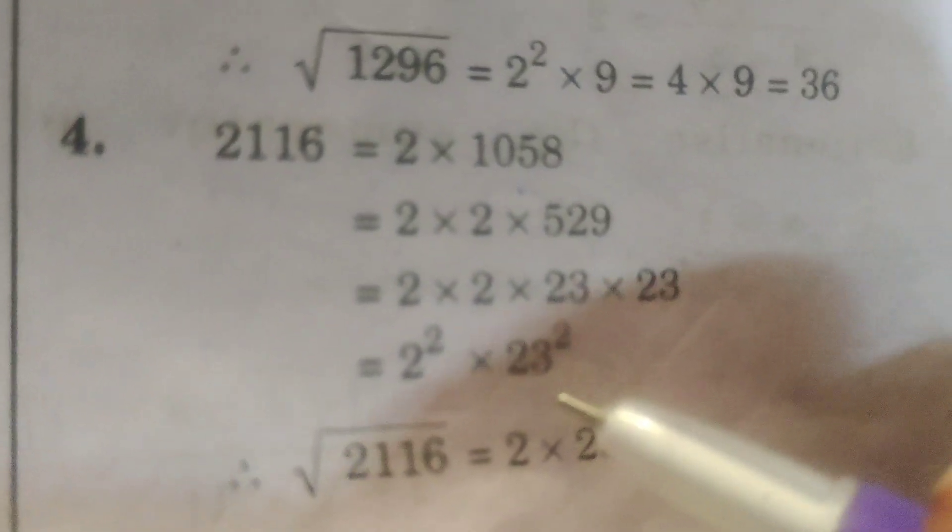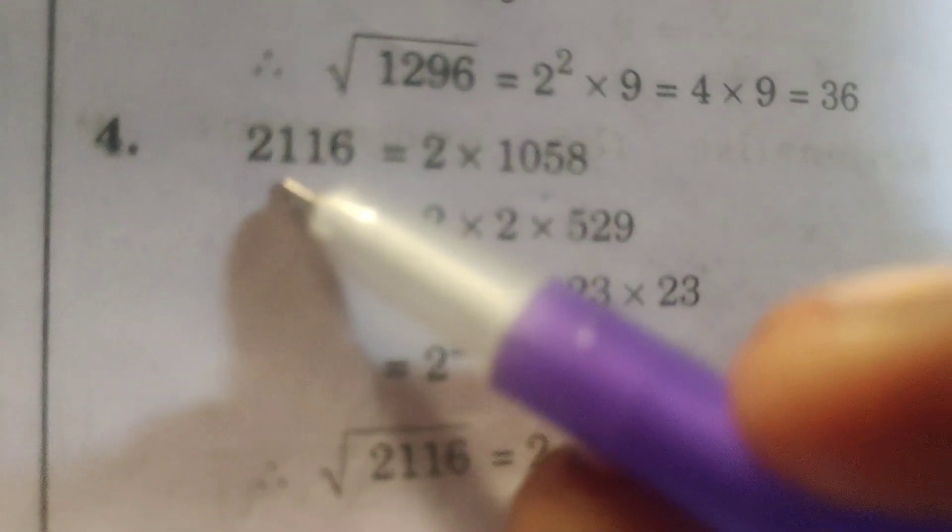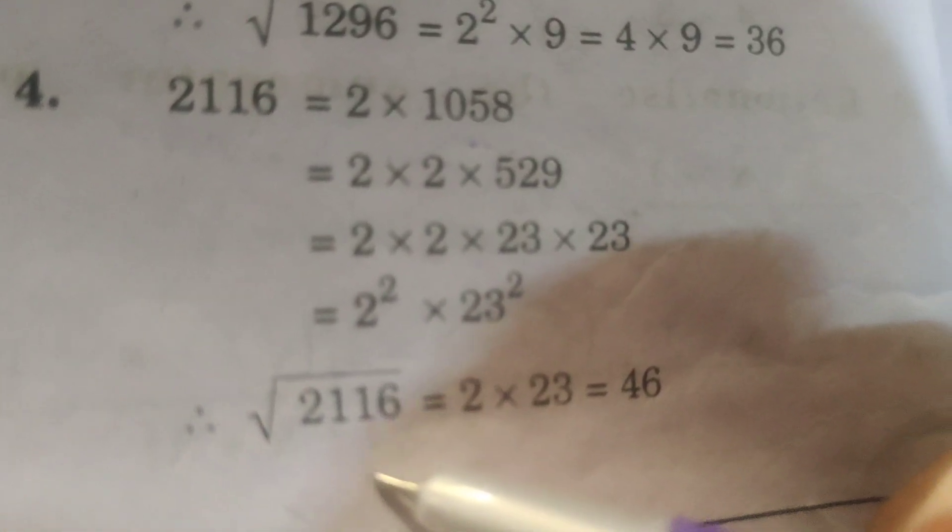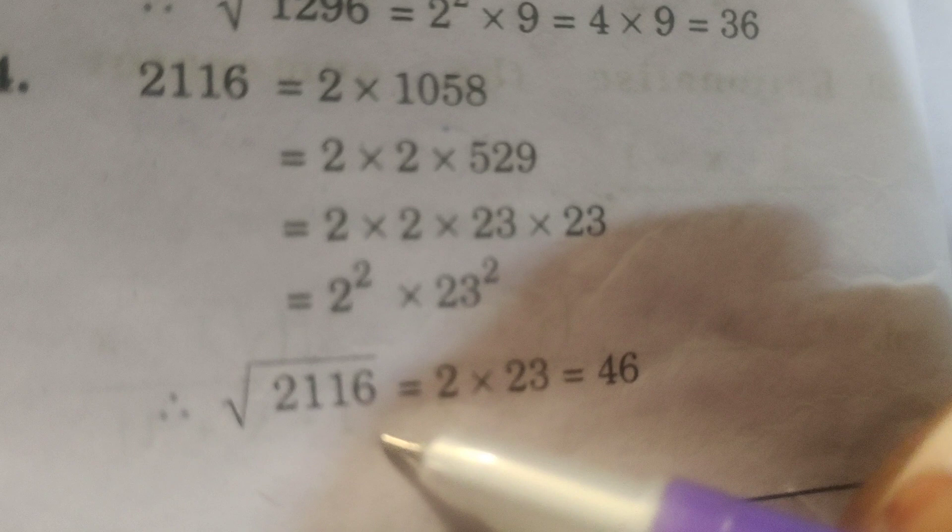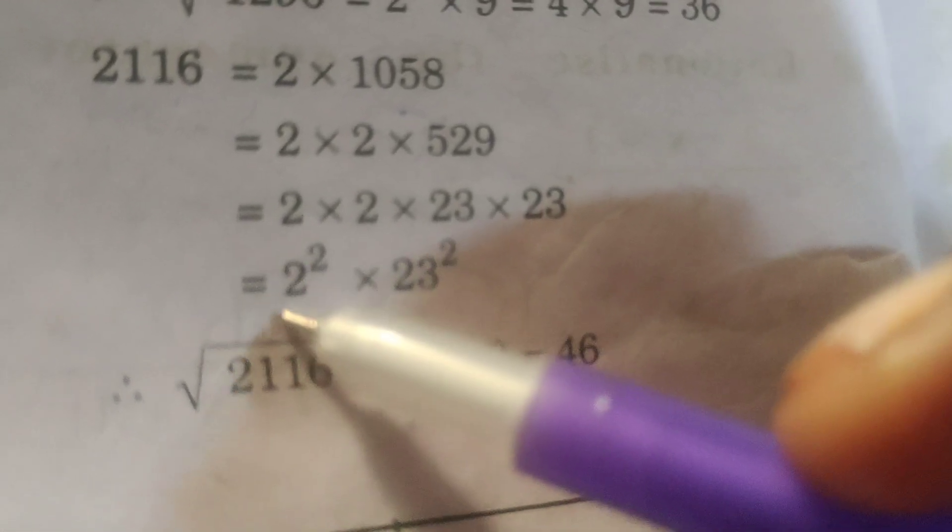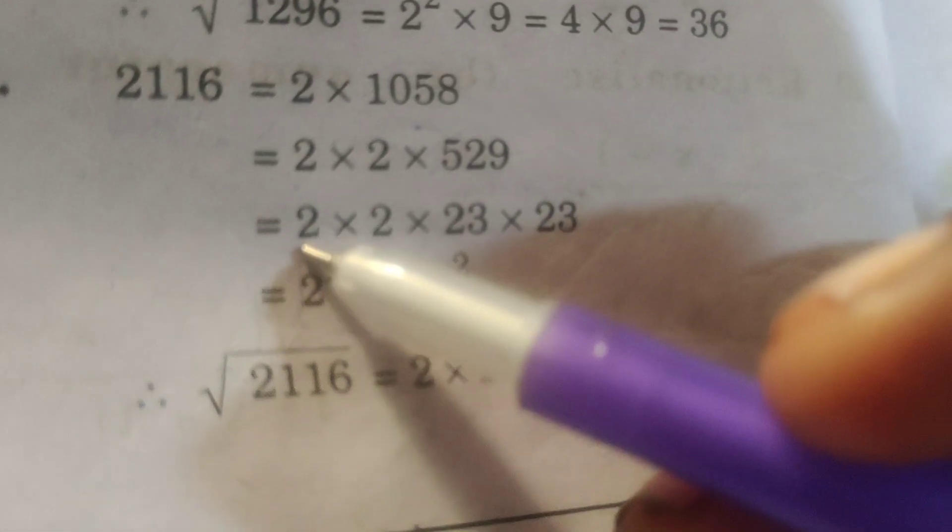Therefore, here we write 2 squared into 23 squared. What do we want? Square root of 2116. Therefore, square root of 2116 equals to square root of this value,